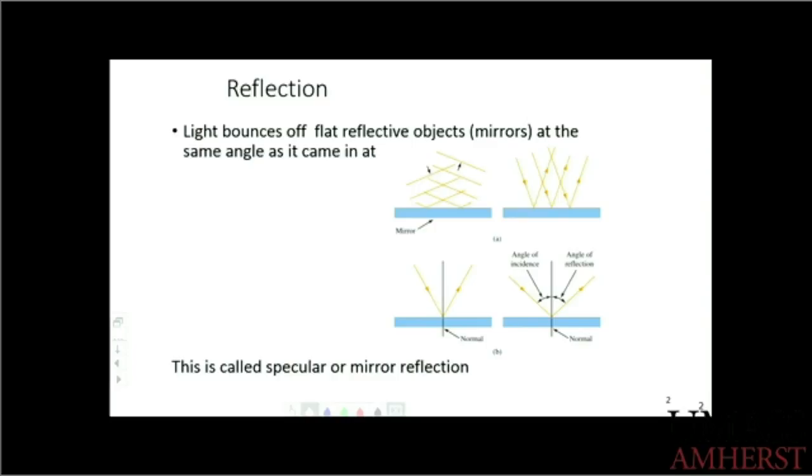This is called specular reflection. If the surface was not smooth, this would still be true at every point on the surface. However, if I look over the entire surface, if it has bumps, then the reflected rays are not all going to be going into your eyes at the same time. They'll be reflecting, obeying the law of reflection locally.